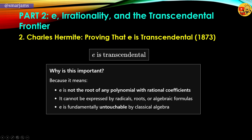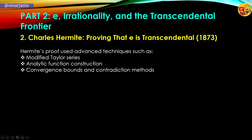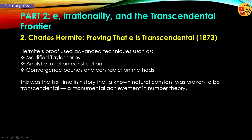This wasn't just a mathematical curiosity. Hermite's proof mattered because it set the boundary between what can be constructed and what lies forever beyond reach. He used tools like modified Taylor series, carefully built analytic functions, and logical contradictions. For the first time in history, a known constant — e — had been proven transcendental. It was a triumph for number theory.